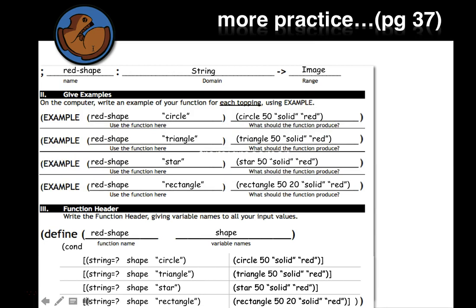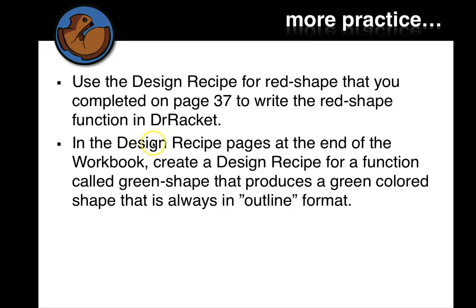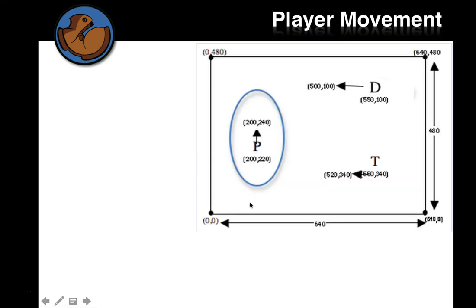Go ahead and transfer your version over to your Unit 7 Racket file. Based on your design recipe from page 37, type that into DrRacket and test it yourself. Then in the blank design recipe pages near the end of the workbook, create a design recipe for a function called green-shape that produces a green colored shape in outline format — similar to what you just did, but outline instead of solid, and green instead of red. Include four examples, then type it into your Unit 7 Racket file and test it.